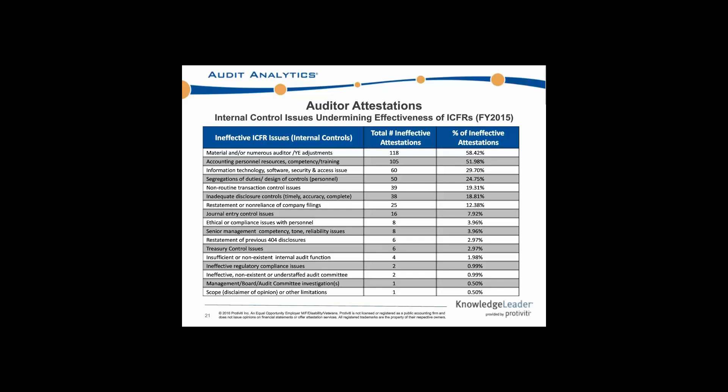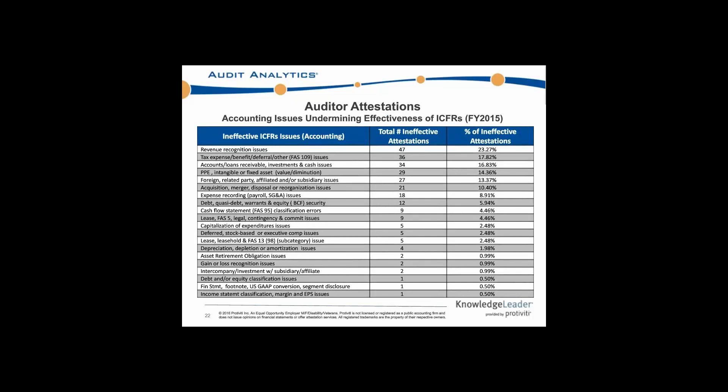The last slide from the auditor attestation point of view is the accounting issues undermining the effectiveness of internal controls. As that polling question indicated, just over 20% — specifically 23% — of these accounting issues cited a revenue recognition issue, and then so on down the line.